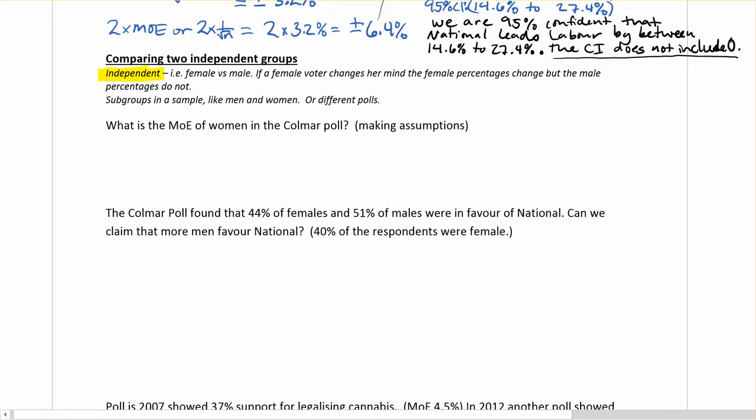Now we're going to look at when we're comparing two independent groups for the margin of error. What we mean by independent groups would be a situation like comparing males versus females. If a female voter changes her mind, the female percentage will change, but the male percentage will not. So there's independence - if one group's results shift or change, it has no impact on the other group's results. Males and females are a common example of this.